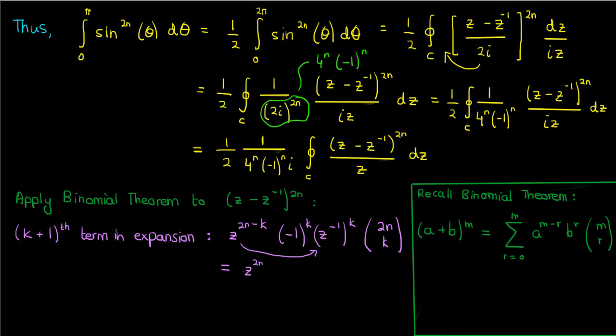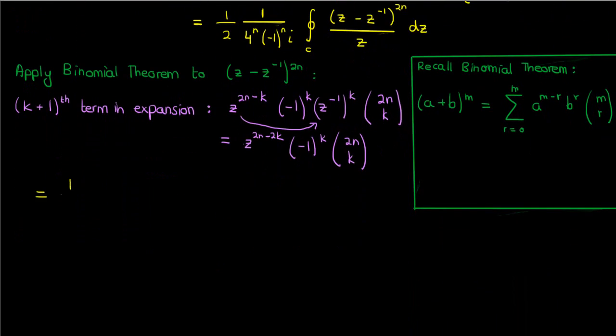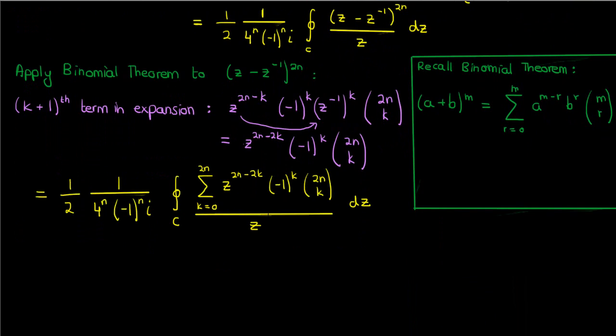Let's simplify this by combining the terms involving z, and we'll get the following. And now let's substitute this into the integral, but now we'll have a summation out front because a bunch of these terms have to be added together to give the binomial expansion of z minus z inverse to the power 2n.